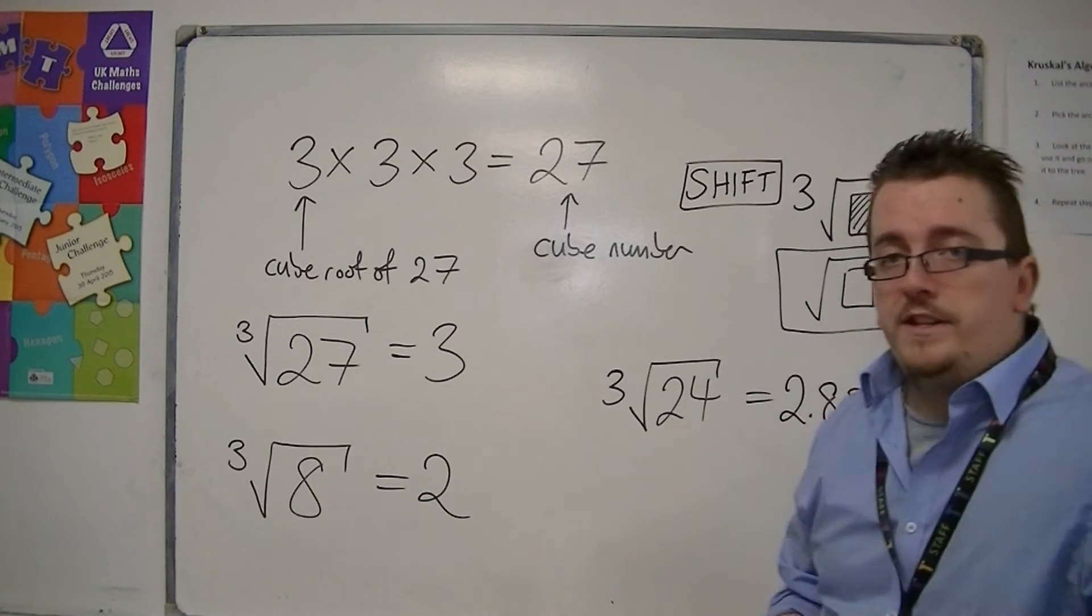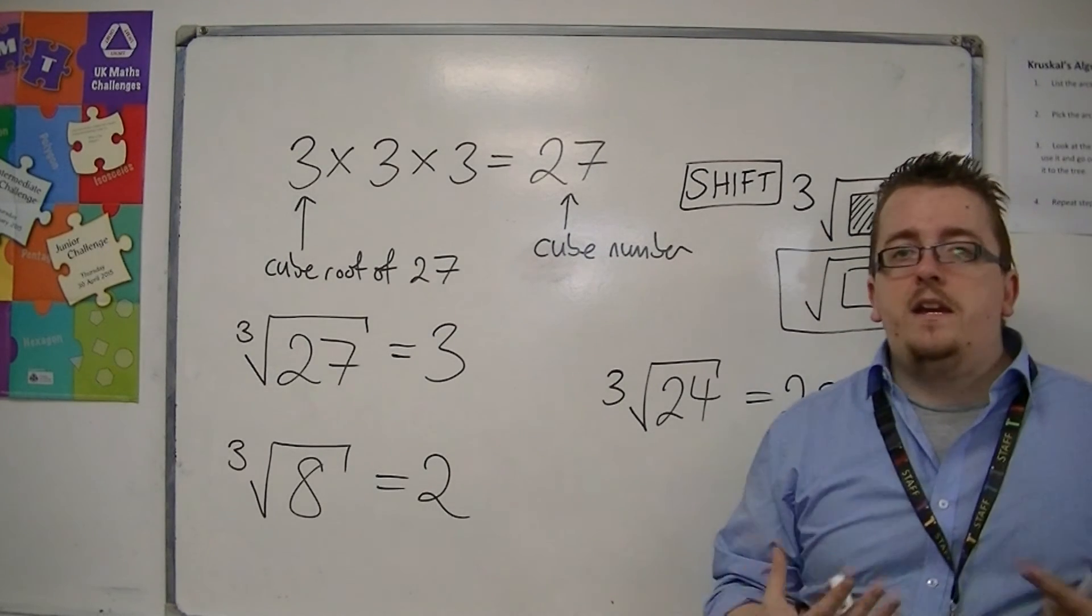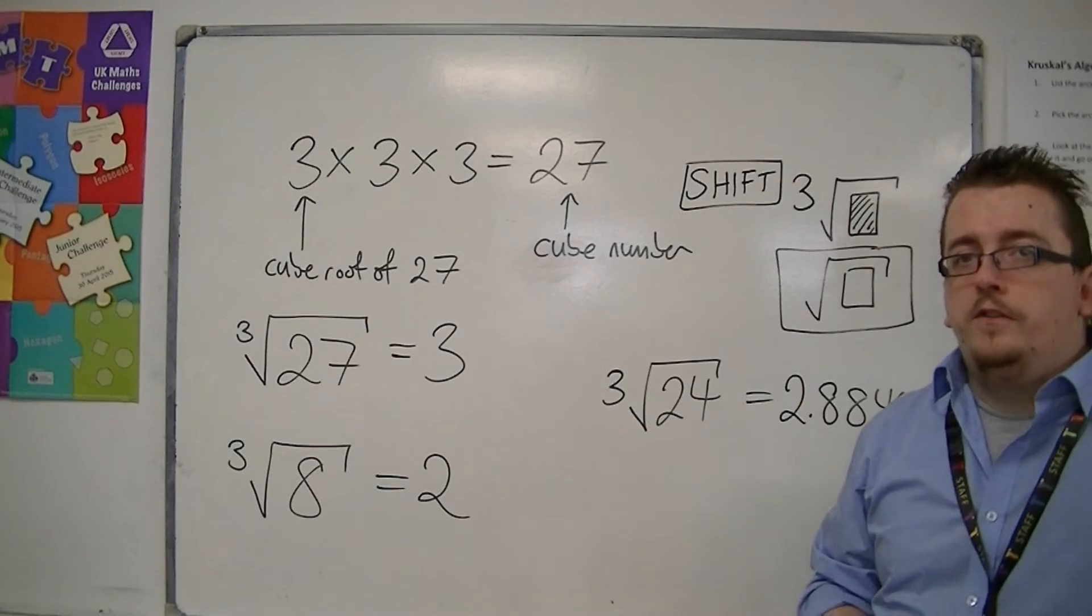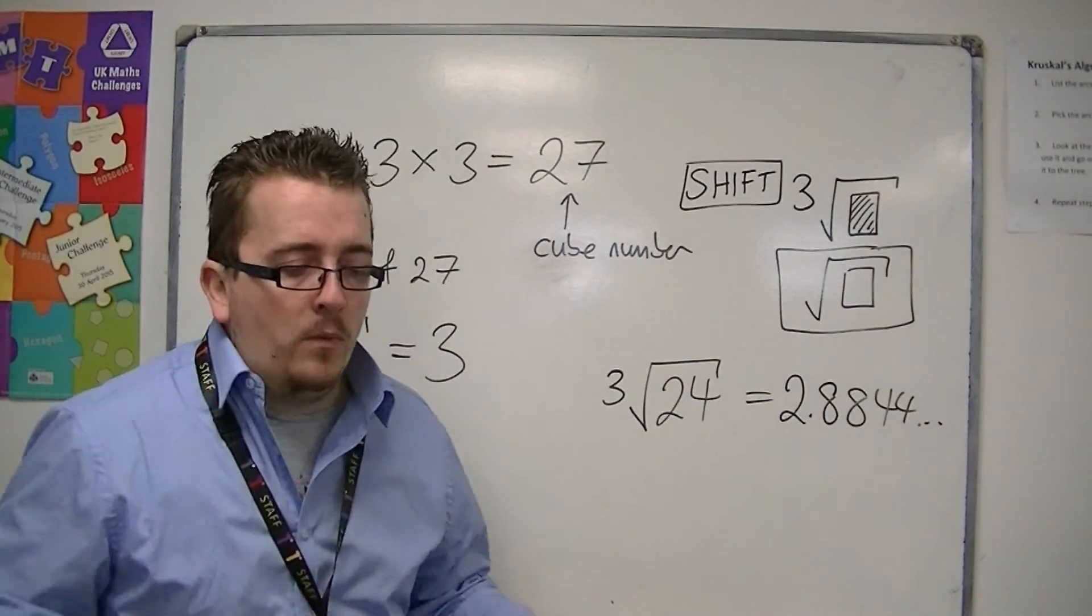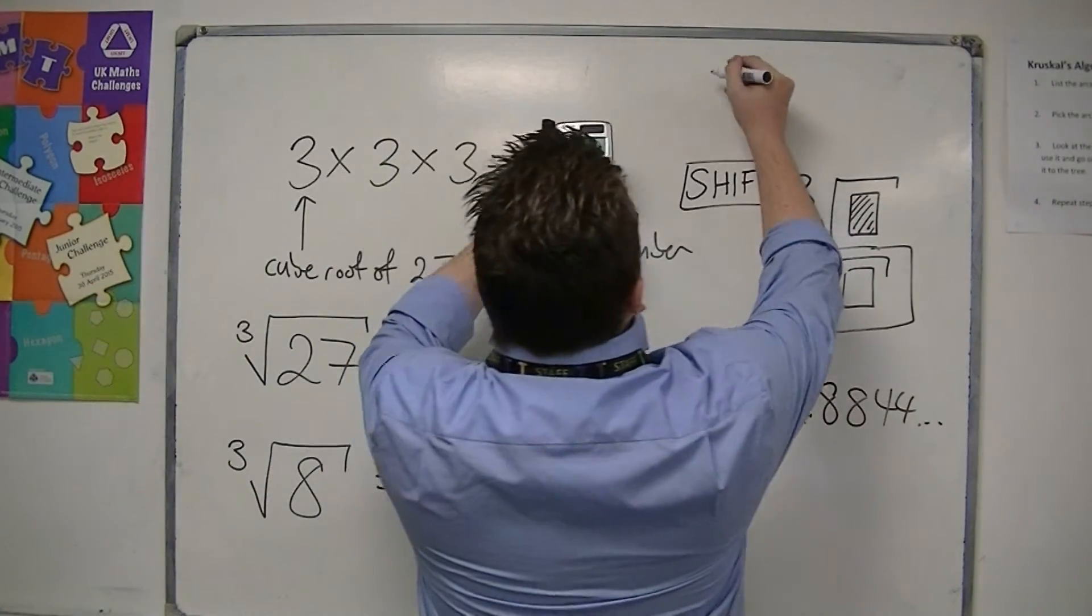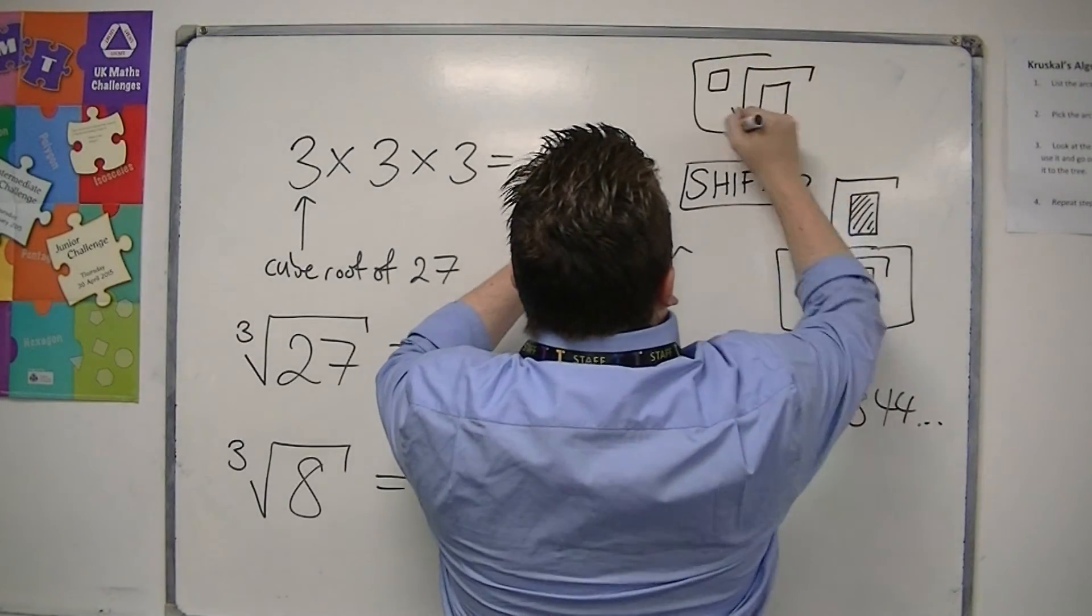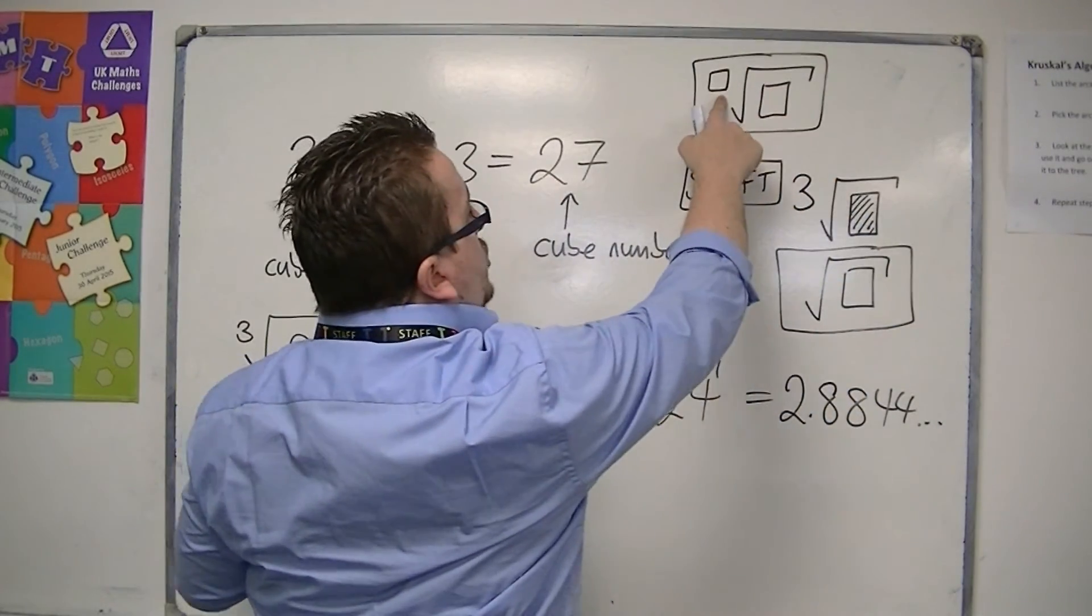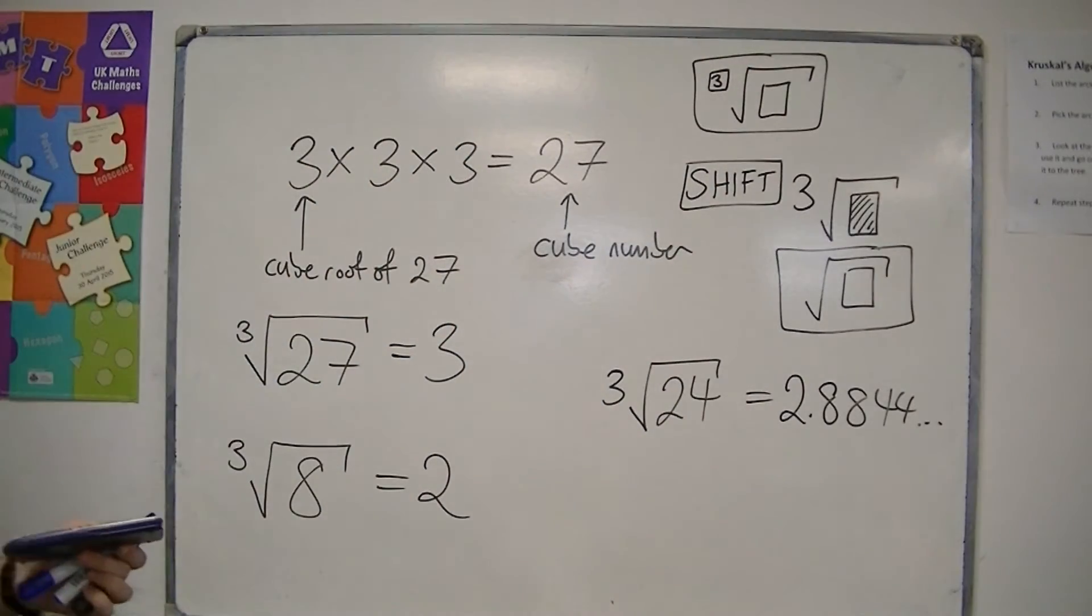Now, depending on your brand of calculator, it might be slightly different, but there should be a way of you finding the cube root. If you cannot find a cube root anywhere, and you don't have a button even that looks like this, for which you would be able to choose that number to be 3, if you don't have that either...